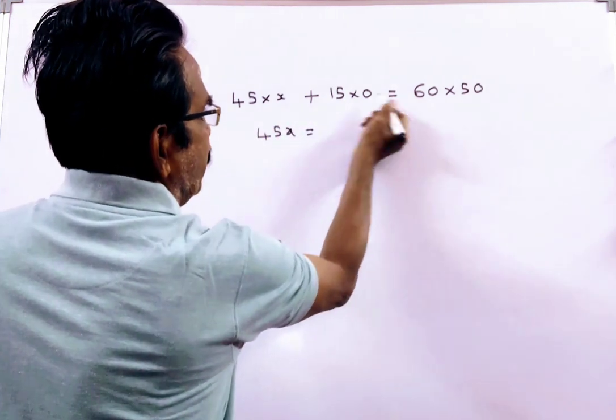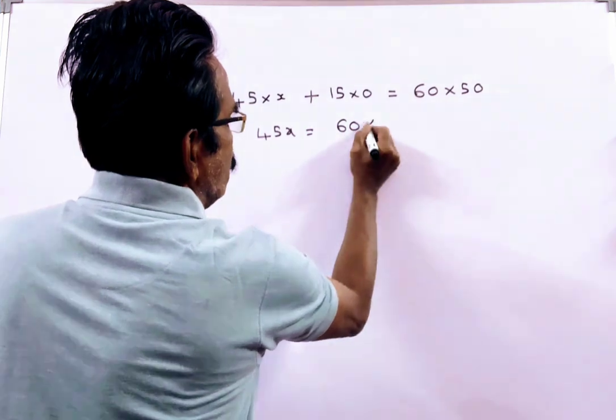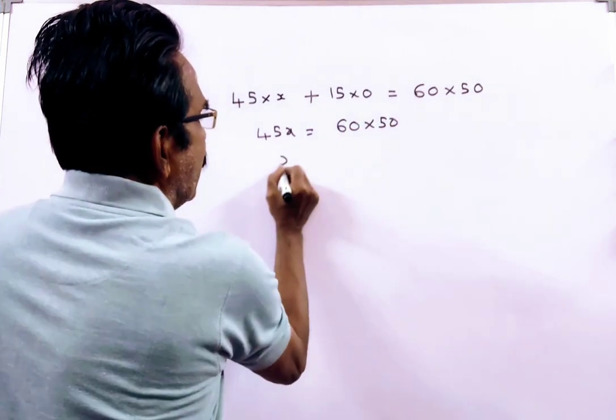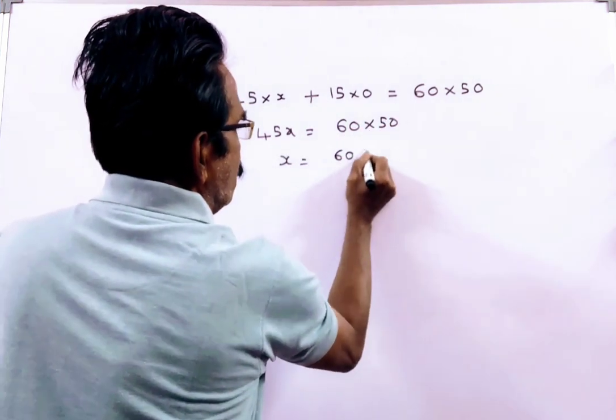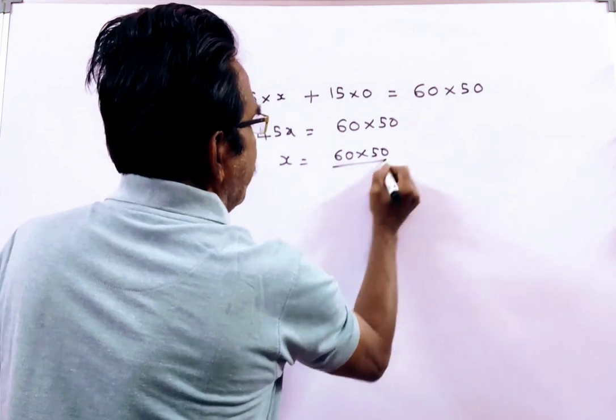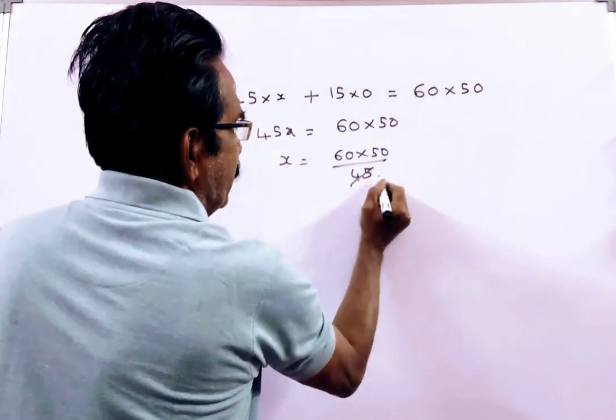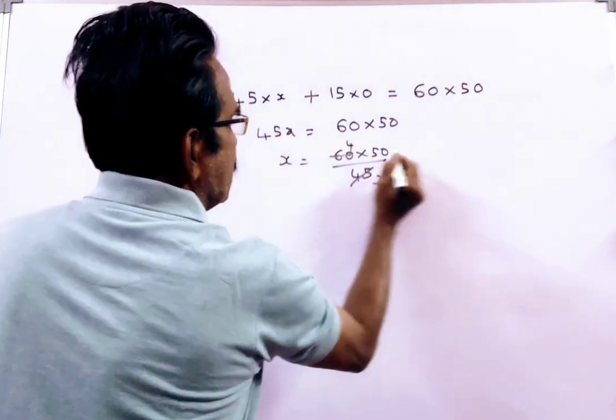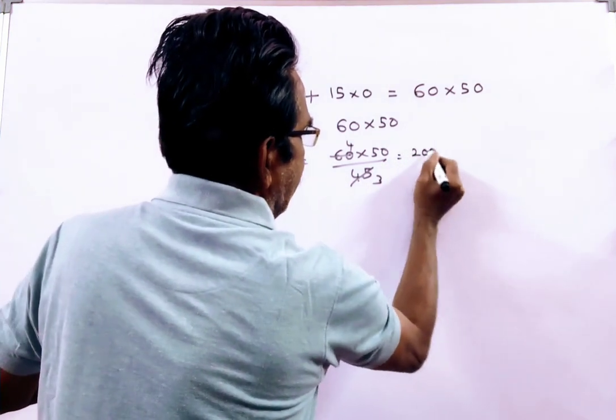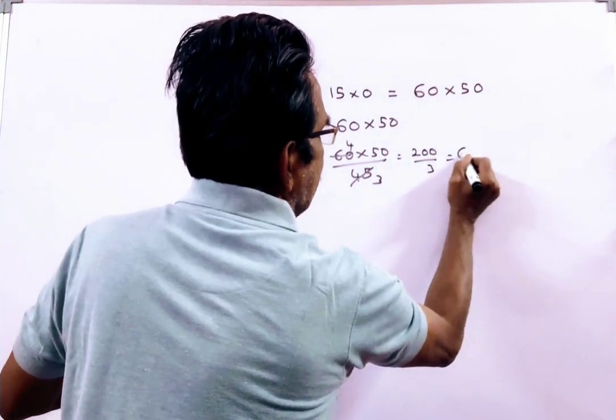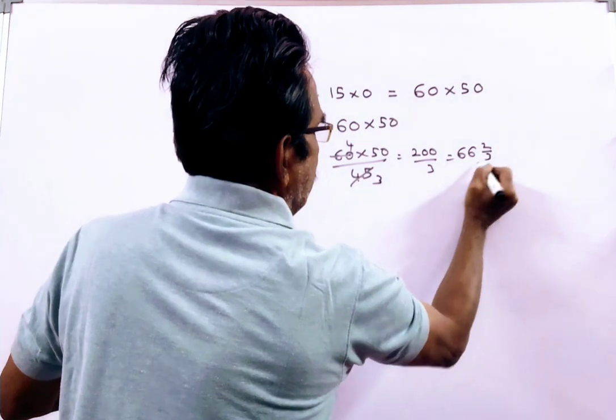45X equals 60 into 50. So X equals 60 into 50 by 45. That simplifies to 200 by 3, which equals 66 and 2 by 3 rupees.